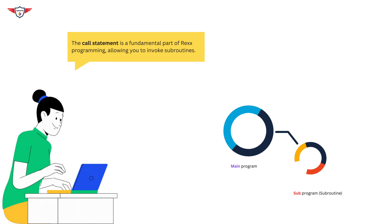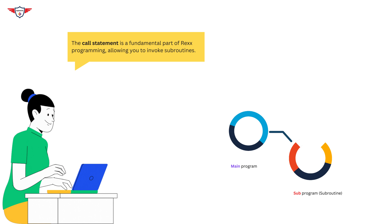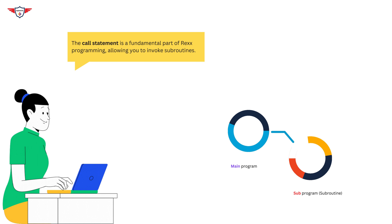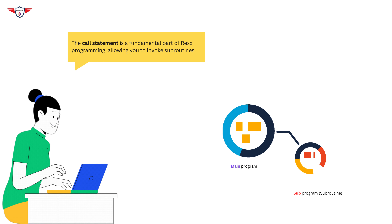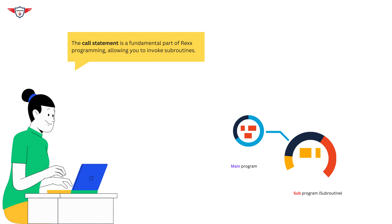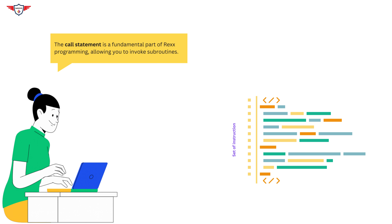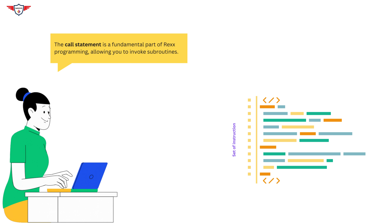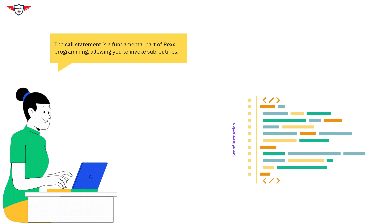The call statement is a fundamental part of RECS programming. It allows you to invoke subroutines in your RECS program. A subroutine is a set of instructions designed to perform a specific task, which can be called upon at any time in your RECS program. This helps you in organizing your code, making it more readable and maintainable.